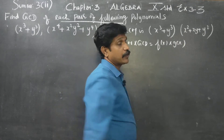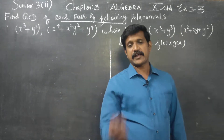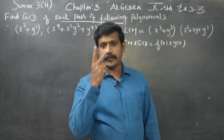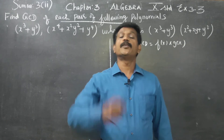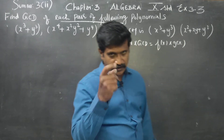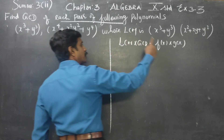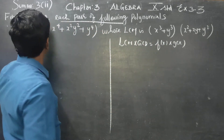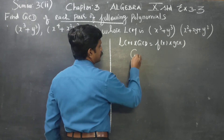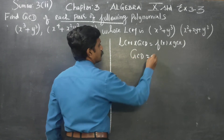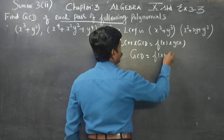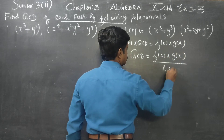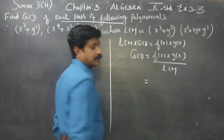Because each pair of the following polynomials is given to us, two polynomials are given. You have to find GCD. Therefore, GCD is equal to F of x into G of x, divided by LCM.